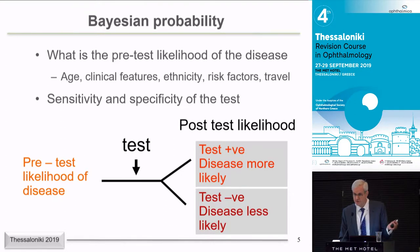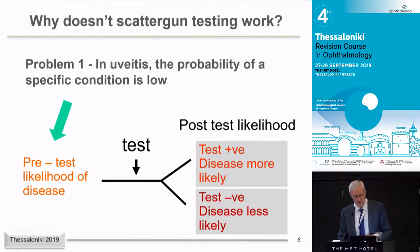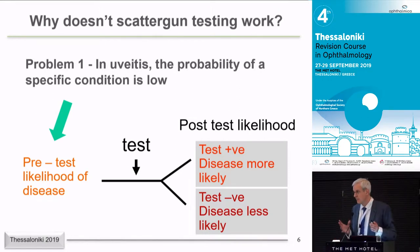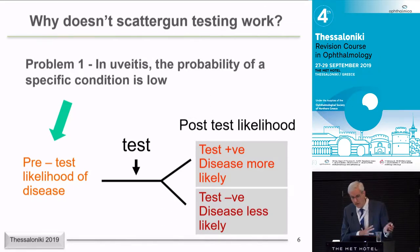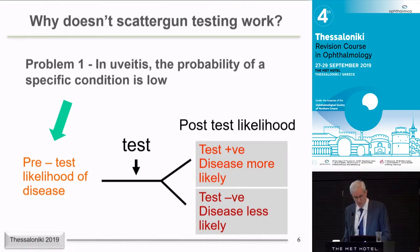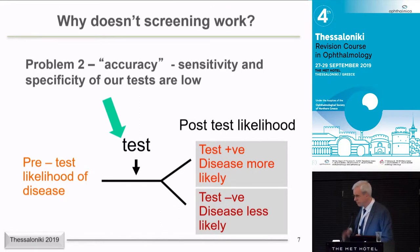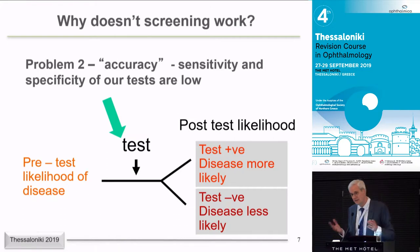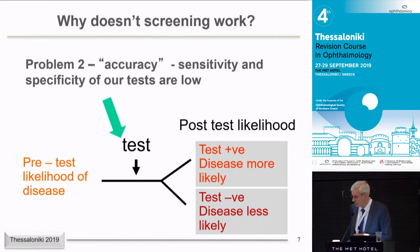This directs our testing. One of the reasons why just firing millions of tests at patients doesn't work is that the actual probability of each condition in uveitis is quite low — they're all quite rare. That's problem number one: the pre-test probability of a specific uveitis condition is quite low. Problem number two is that most of our tests are not very good. There are a few exceptions, but often sensitivity and specificity are useful but by no means a hundred percent.